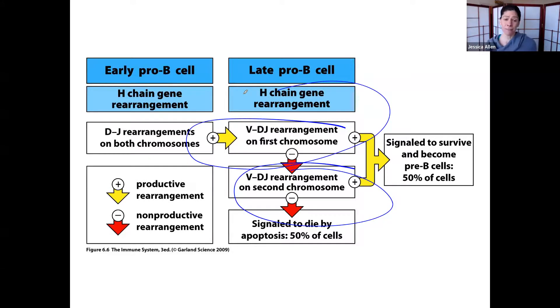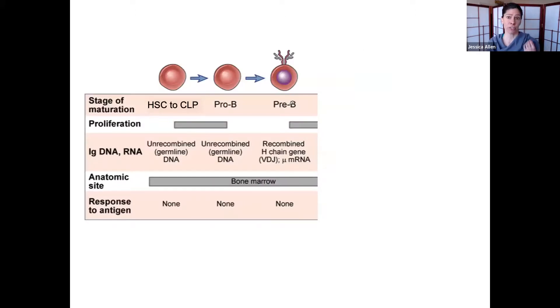Honestly, only about half of these rearrangements make proper heavy chains that combine with the surrogate light chains and can interact with IG alpha and beta. So, this is the first major checkpoint, going from pro-B to pre-B.